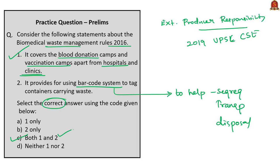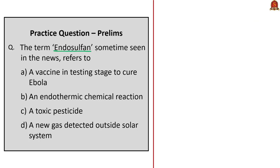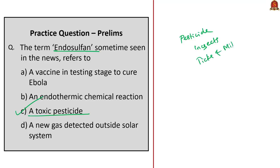The fifteenth question asks what 'endosulfan' is. The correct answer is that it is a toxic pesticide — option C. Endosulfan is a pesticide that kills insects as well as ticks and mites, which belong to the subclass Acari in the class Arachnida.